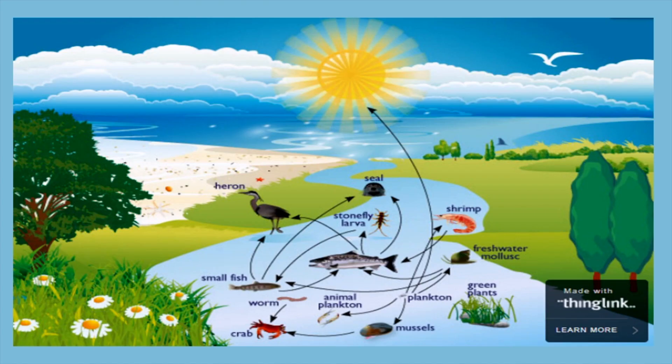Estuaries are home to diverse groups of plants and animals. As you can see in the illustration, many types of animals benefit and live in the estuaries. In the Philippines, mangroves or bacawan grow in abundance in estuaries. These mangrove forests are important breeding grounds for marine animals. An estuary also serves as nesting and feeding sites for animals.